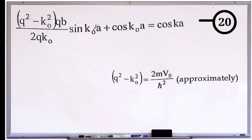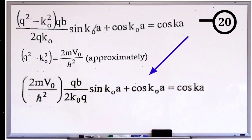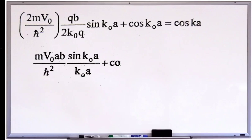By considering this, equation number 20 can be rewritten as 2mV₀ divided by ℏ² into qb divided by 2k₀q into sin k₀a plus cos k₀a which will be equal to cos ka. Then we can simplify and rearrange the same equation as mV₀ab divided by ℏ² into sin k₀a divided by k₀a plus cos k₀a equal to cos ka.